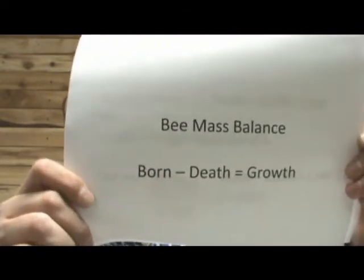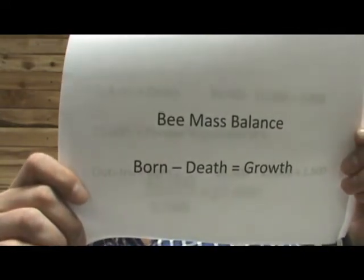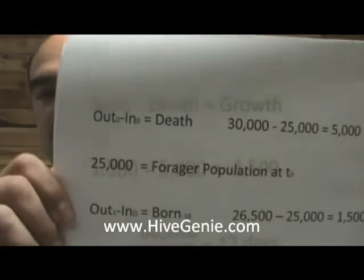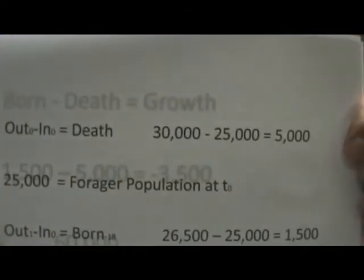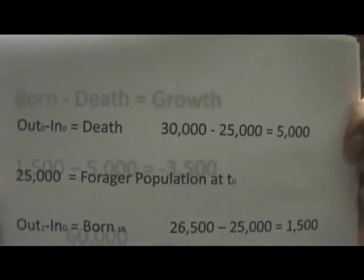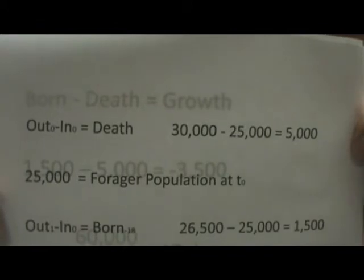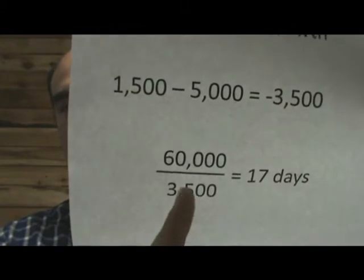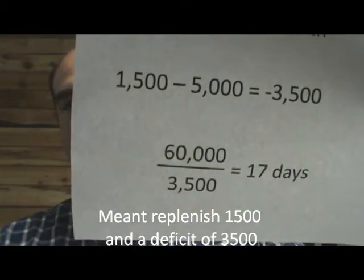So we want foragers to live more than four or five days. We can do a mass balance of bees: bees born minus bees that die equals the growth in bee population. Let's say we have 30,000 foragers and 25,000 come back — so 5,000 foragers are dead. The queen can only replace about 1,500 a day. That means if we lose 5,000 but can only replenish 1,500, we have a net loss of 3,500 per day. With a hive population of 60,000 divided by 3,500, we only have about 17 days left.